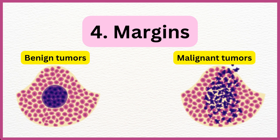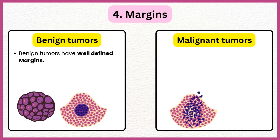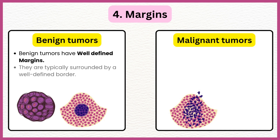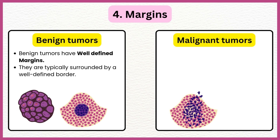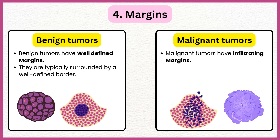Margins of both types: Benign tumors have well-defined margins; they are typically surrounded by a well-defined border. Malignant tumors have infiltrating margins and do not have well-defined borders.